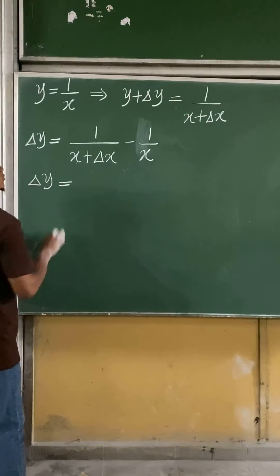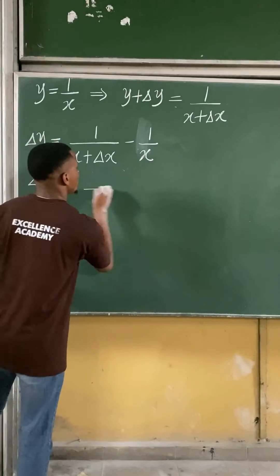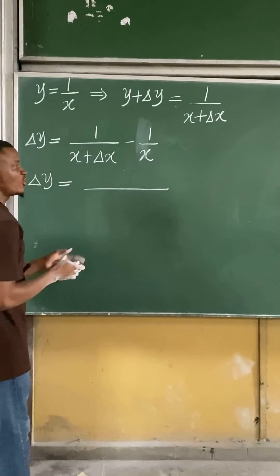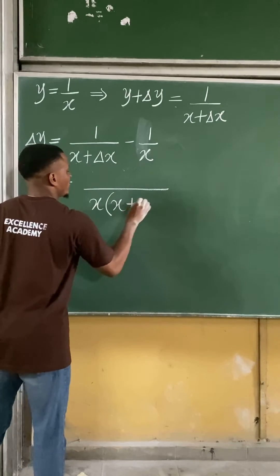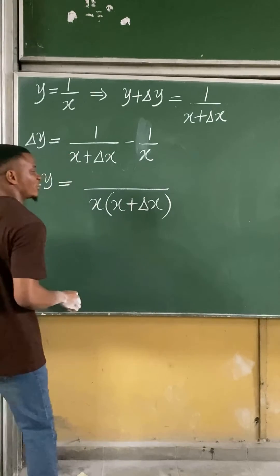We'll have that change in y is equal to... The LCM will simply be equal to the product of both denominators. It becomes x multiplying x plus change in x. This becomes your LCM.